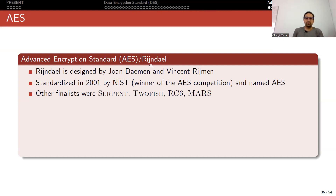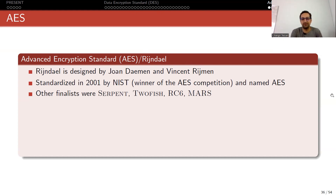This algorithm was called Rijndael, designed by two Belgian cryptographers Joan Daemen and Vincent Rijmen. The name Rijndael comes from letters from the last names of the designers. There was a competition called the Advanced Encryption Standard competition, and Rijndael won - this is why we now call it AES, Advanced Encryption Standard.